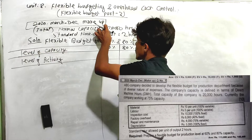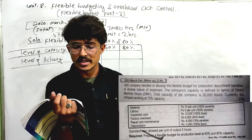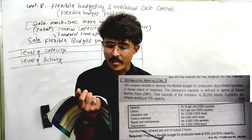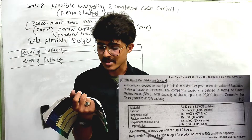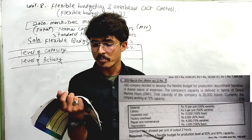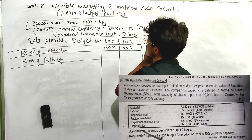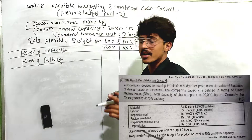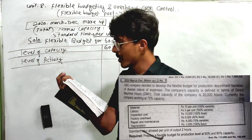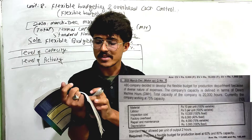The cost data includes: direct labor at rupees 5 per unit (100% variable); inspection cost at 10,000 (100% fixed); factory overhead at 6,000 (40% fixed); repair and maintenance at 4,000 (75% variable); depreciation at 5,000 (100% fixed). The standard hours allowed per unit of output is 2 hours, meaning 1 unit per 2 hours. The task requires preparing a flexible budget at 60% and 80% capacity.